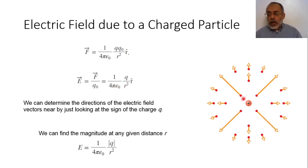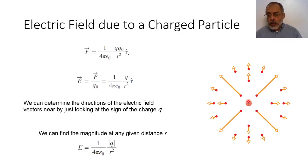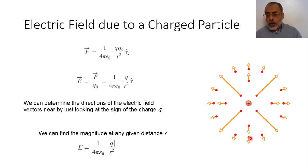Close to the charge Q, the magnitude of the electric field is large. The direction of the electric field — if the charge is positive — is outward in the radial direction. Far from the charge, the magnitude of the electric field is small, and its direction is away from the positive charge. This is the meaning of this drawing.